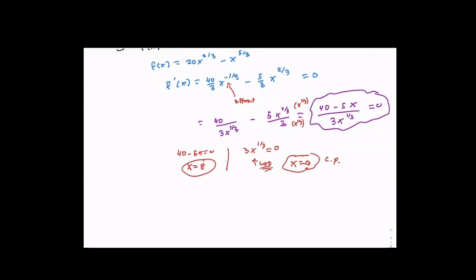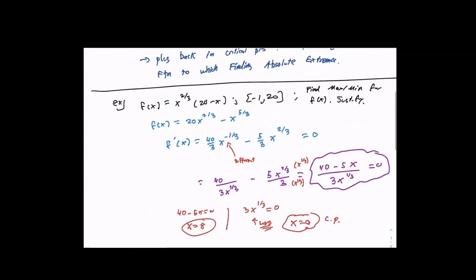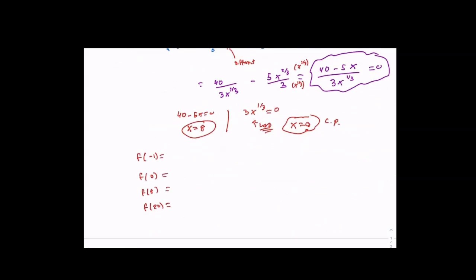Once you've done that, the process is always the same. To finish it off, I'm going to find f of negative one, f of zero, f of eight, and f of twenty because my interval was negative one to twenty. Remember, this is a justification — it's also what we call the candidates test.